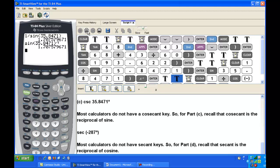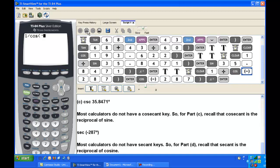For Part D, we want to find the secant of negative 287 degrees. Again, your calculator most likely doesn't have a secant key, but you can find secant by taking the reciprocal of cosine. So we just enter 1 divided by the cosine of negative 287 degrees, and we'll get the correct result for secant.